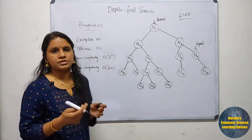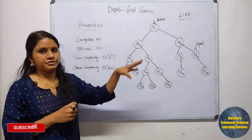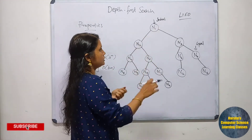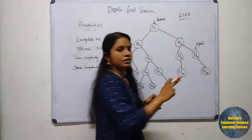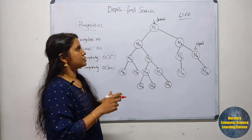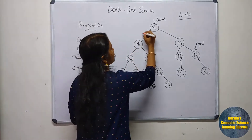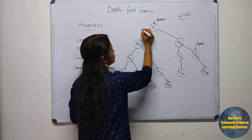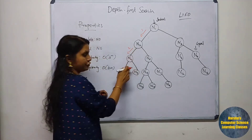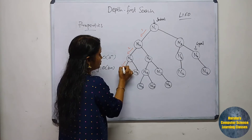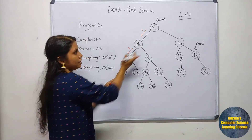Now we'll discuss how we can traverse from the initial node to the goal node using DFS. N1 is the initial node and N7 is the goal node. From N1 we move to N2, from N2 we move to N4, and from N4 we move to N8. After that, this level is complete.